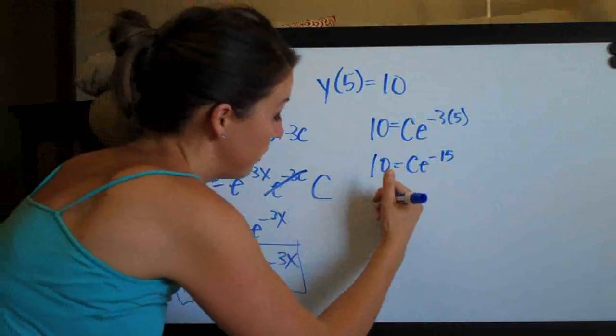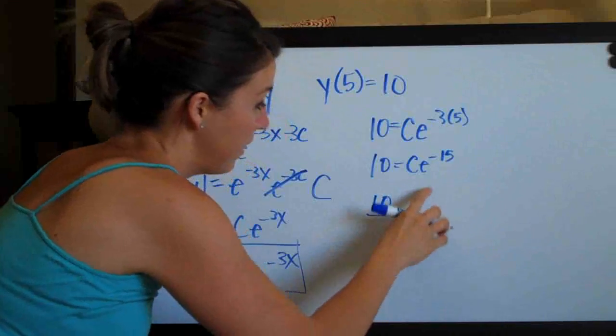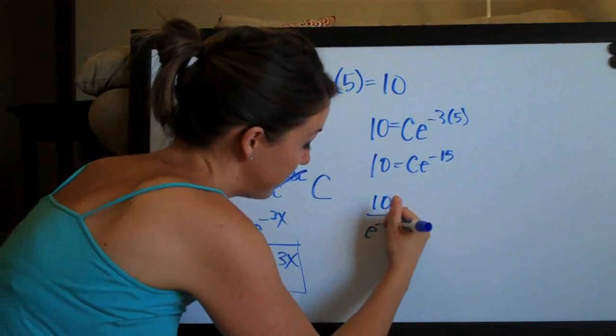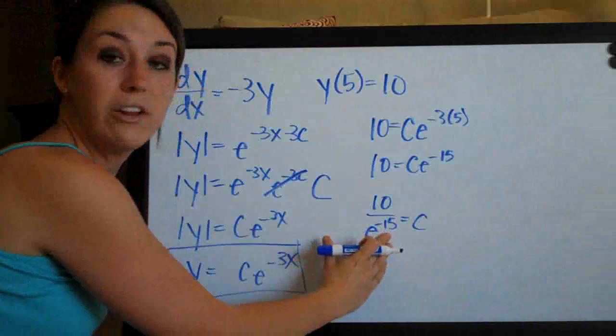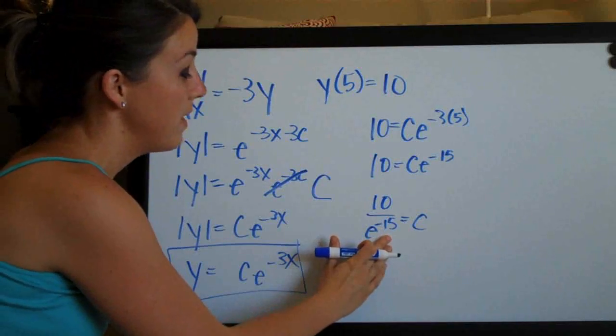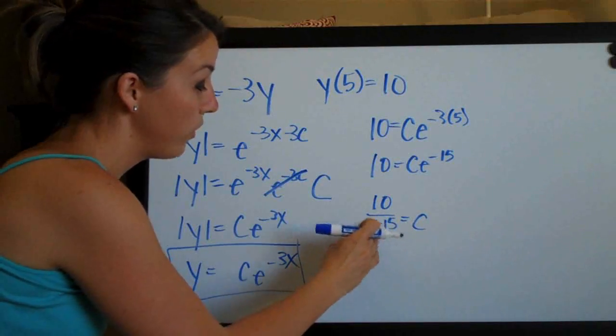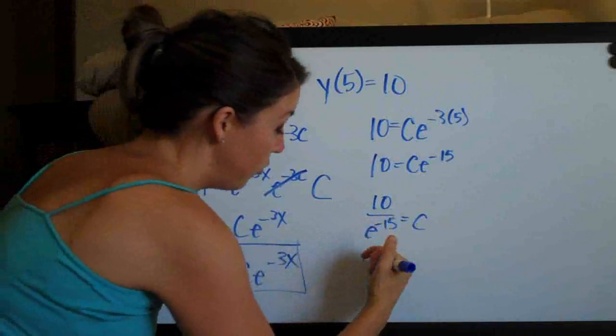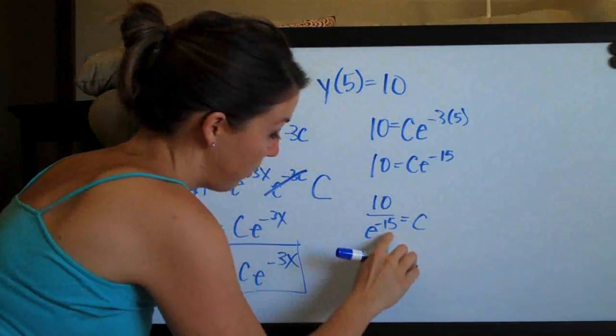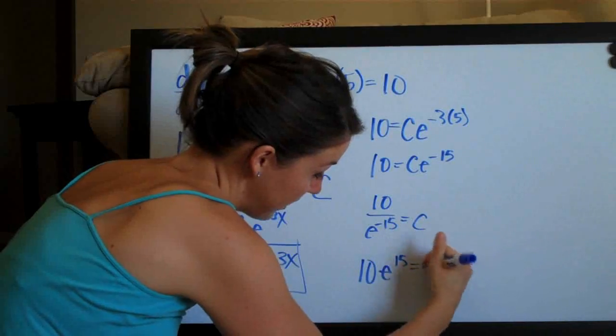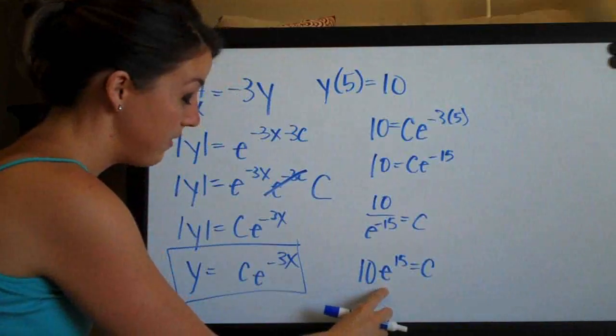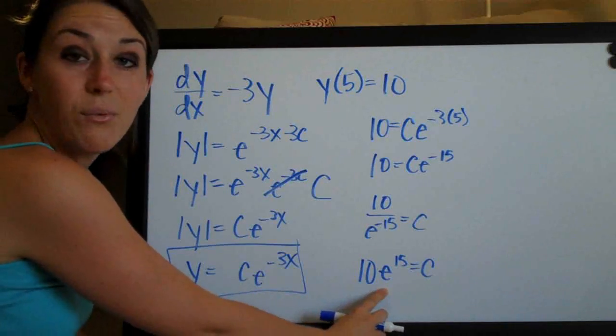And to solve for c, let's go ahead and divide both sides by e to the negative 15. And because we have a negative sign on this exponent, we can make it positive by moving this whole e to the negative 15 to the numerator. That will cause the exponent to flip from a negative to a positive. So c is going to equal 10 e to the 15.